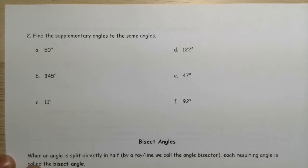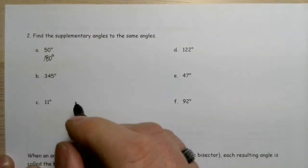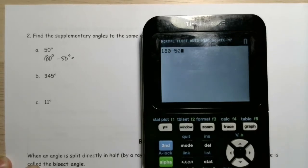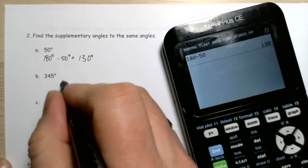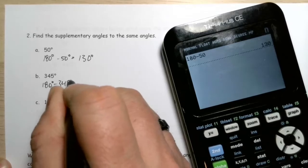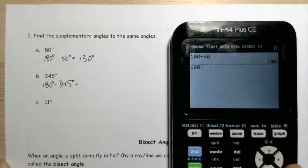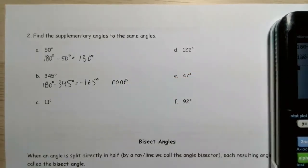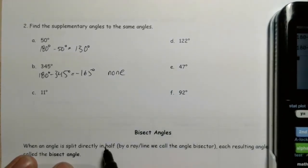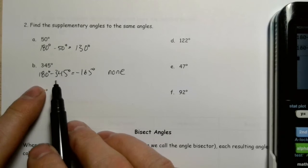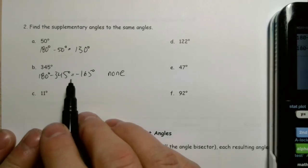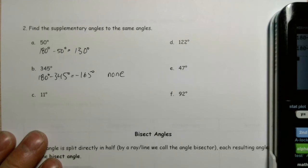Now we're going to find the supplementary angles to the same angles, and with this one we simply subtract from 180. 180 minus 50 gives us 130 degrees — that's its supplement. 180 minus 345 gives us negative 165 degrees, so we write none — there is no supplement. It's important that you get these in the right order. Don't do 345 minus 180 — you want it to be 180 minus the given angle, or with the previous question, 90 minus the given angle.